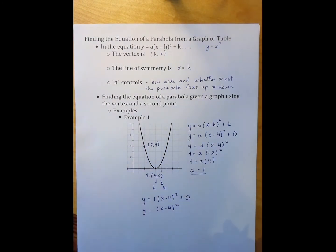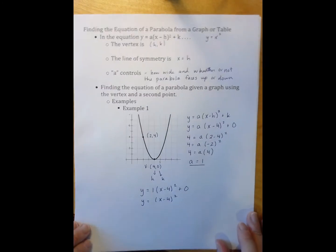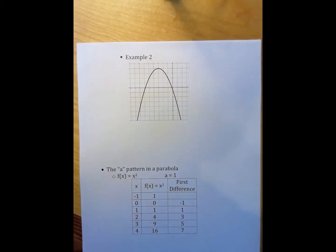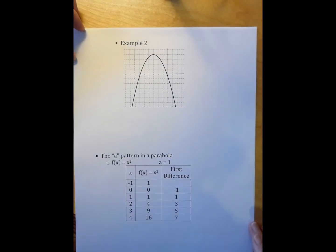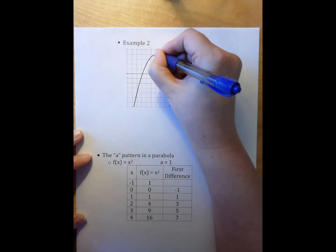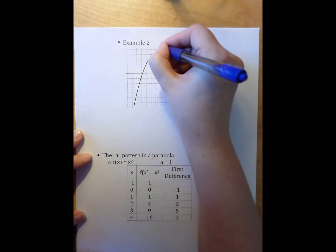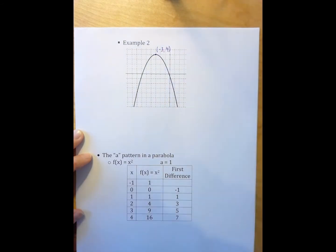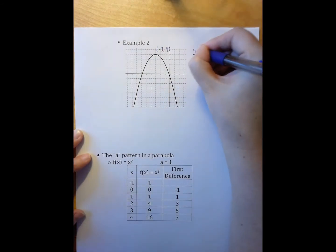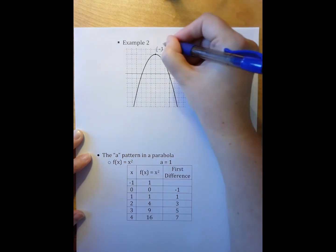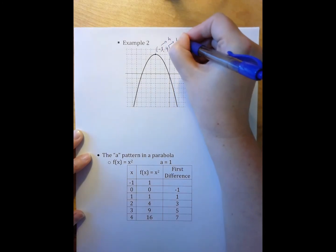Now, I have one more example using this method. So, let's look at this graph. In this case, our vertex is a maximum, and our vertex occurs at negative 3 comma 4. So, again, I start with my generic equation written in vertex form. I can now plug in my h and k.